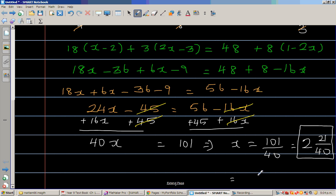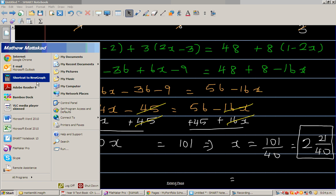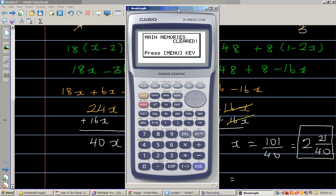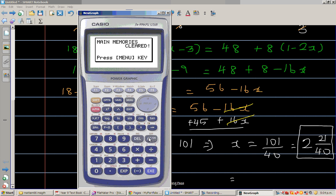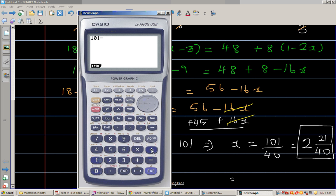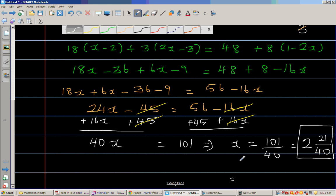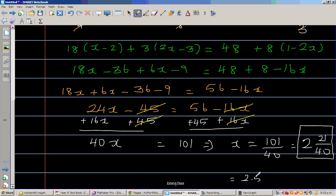let us use a calculator. So this is 101 divided by 40. That is 2.525. So this is 2.525 is the answer in the decimal and in a fractional or in a mixed form.